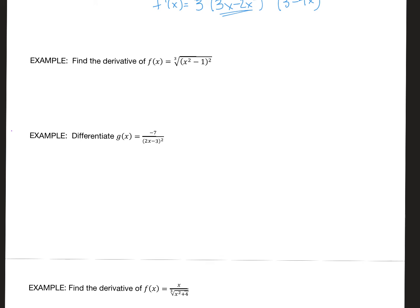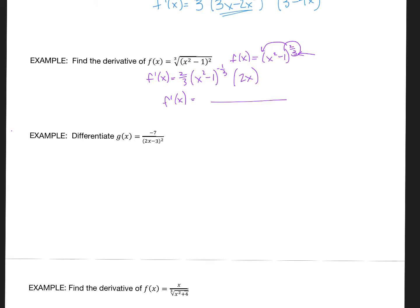For this one, rewrite the original function as (x² - 1) to the 2/3. Taking the derivative: the exponent goes out in front, the stuff inside stays the same, decrease the exponent by one to get negative 1/3, then take the derivative of the inside which is 2x. Cleaning up: the numerator is 4x and the denominator is 3 times (x² - 1) to the 1/3.